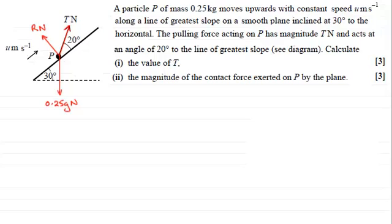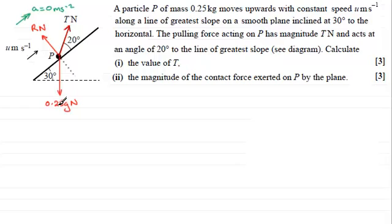The particle is moving up the plane with a speed of u meters per second, but at a constant speed. So the acceleration a equals zero meters per second squared. Also, when dealing with questions on planes, it's a good idea to draw a dotted line, and the angle that the weight makes with this dotted line is exactly the same as the angle of inclination of the plane to the horizontal — so in this example, that angle is 30 degrees.